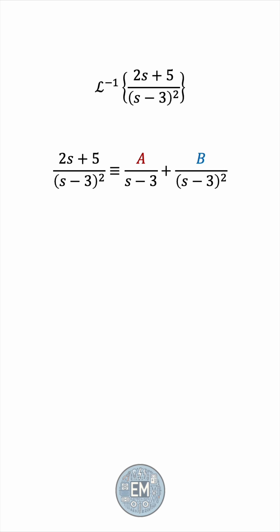Let's now clear the denominators by multiplying throughout by the square of s minus 3. We'll expand the pair of brackets, and comparing coefficients, we see that a must be 2, and b must be 11.